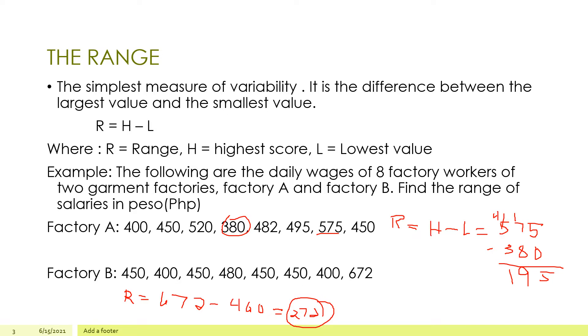So therefore, kung susumahin mo, may mataas na sweldo ang binigay ang Factory B. At saka ang lowest nila is 400. So kumbaga, mas maganda ang sahod sa Factory B.